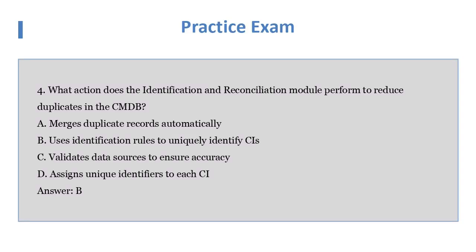Question 4: What action does the Identification and Reconciliation Module perform to reduce duplicates in the CMDB? A. Merges duplicate records automatically. B. Uses identification rules to uniquely identify CIs. C. Validates data sources to ensure accuracy. D. Assigns unique identifiers to each CI. Answer: B.